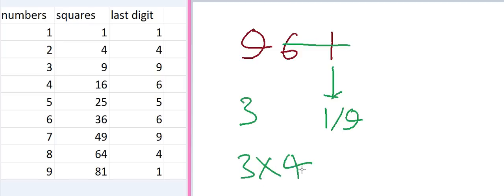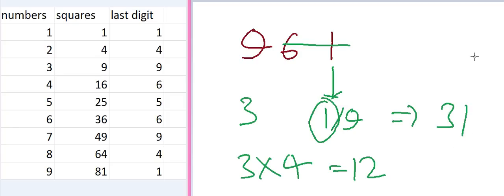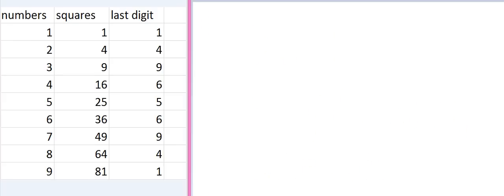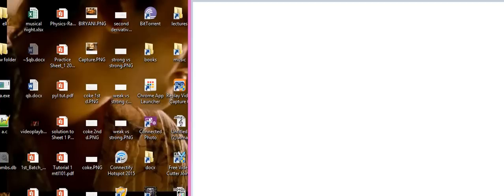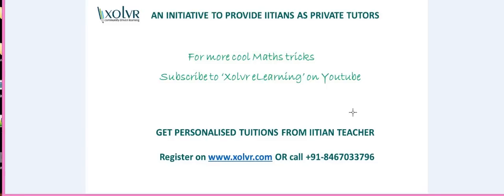Now multiply 3 by the number just after it: 3 times 4 equals 12. Since 9 is less than 12, we take the smaller candidate, so our answer is 31. You will get faster and faster after solving every question — it's quite an easy trick. For more cool math tricks, subscribe to Jolly Boy in Learning on YouTube. Thank you.